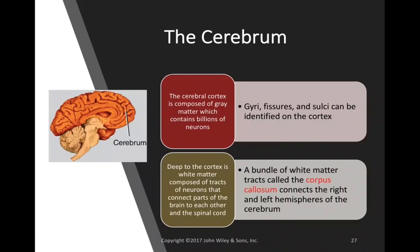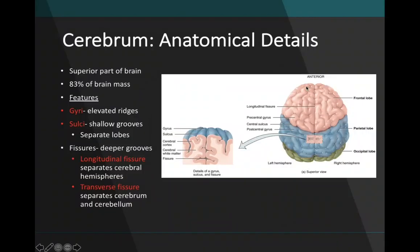The cerebrum contains both gray matter and white matter. Unlike the spinal cord, the cerebrum's gray matter is on the outside and white matter is on the inside. The outer gray matter, composed of billions of neuronal cell bodies, is termed the cerebral cortex, where we see all the gyri and sulci. Below the cortex is white matter composed of myelinated axons called tracts. A special white matter structure called the corpus callosum connects the two cerebral hemispheres.